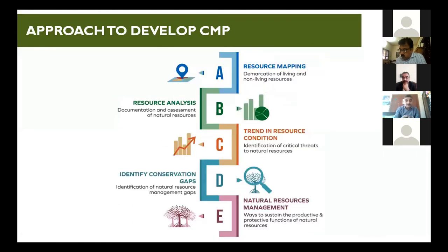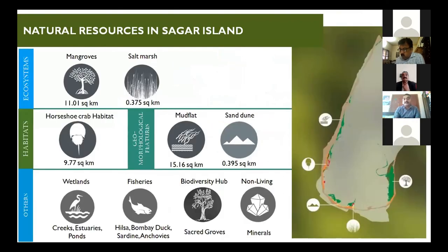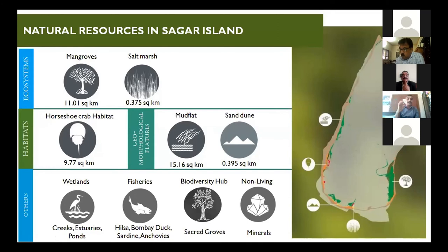After preparing the draft Conservation Management Plan (CMP) and conducting stakeholder consultations, the plan was submitted and approved. The approach involves resource mapping, analysis of trends and conditions, identifying conservation gaps, and suggesting interventions. For Sagar Island, the mapping shows 11.1 square kilometers of mangrove and 0.35 square kilometers of salt marsh, among other ecologically sensitive areas as per the CRZ 2019 notification.